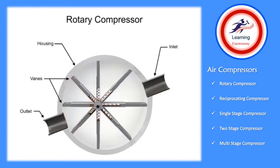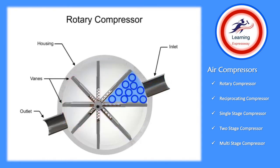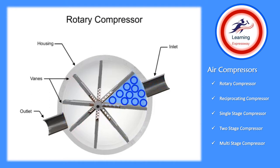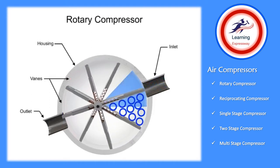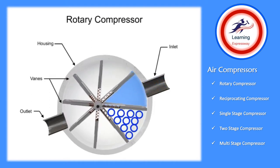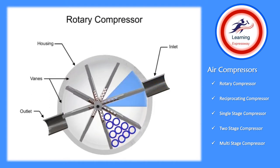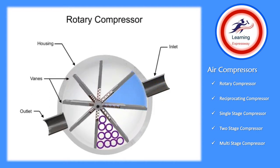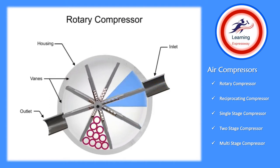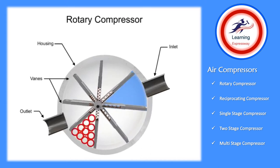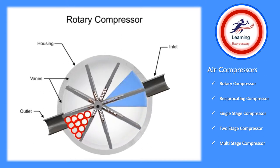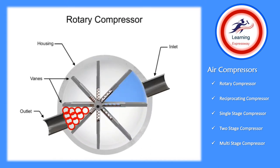Air enters at the largest chamber. As the vanes rotate, they retract, causing the chamber to get smaller and compress the air. Air exits at the smallest chamber.